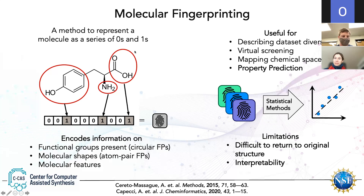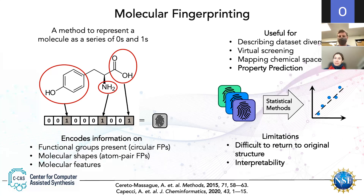Morgan fingerprints encode information on which functional groups are present. The algorithm looks for specific functional groups or certain atoms connected together. If a specific functional group or pattern is present, it gets encoded in the bit vector as a one; zero if that structure is not present. We can also get information about molecular shapes using atom pair fingerprints, which encode how far away each atom is from any other atom. People also tack on DFT or experimental features onto these fingerprint bit vectors for extra molecular information.